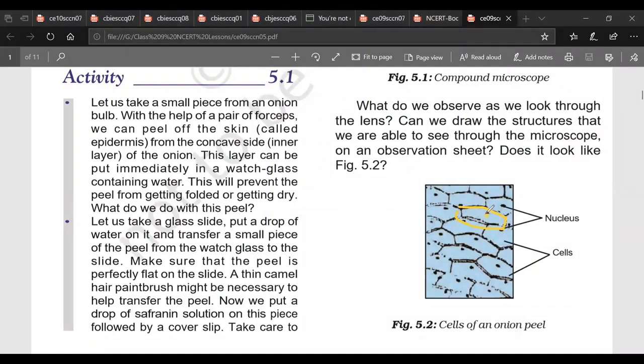And the nucleus. Nucleus and cell wall will be darkly stained and they will be very light stained cytoplasm. So very light cytoplasm. So this is how we will be observing onion peel cells.